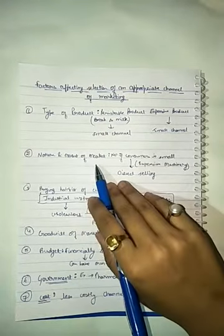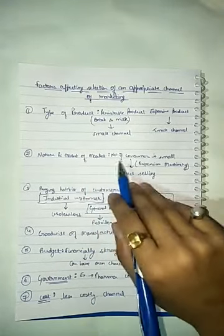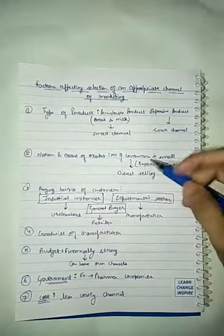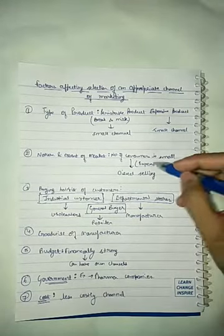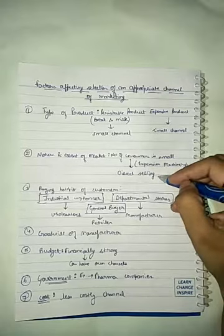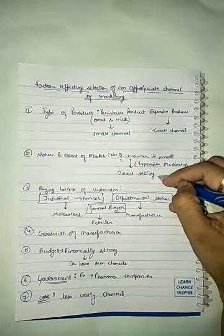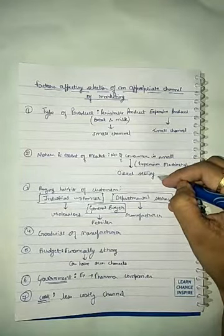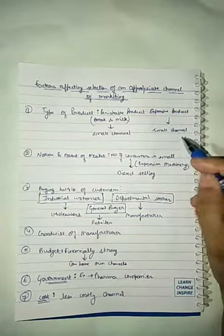Second is the nature and extent of market. Our market is the number of consumers. If our number of customers is small, for expensive machinery, we have to choose direct selling options or small channels - one level or two level.